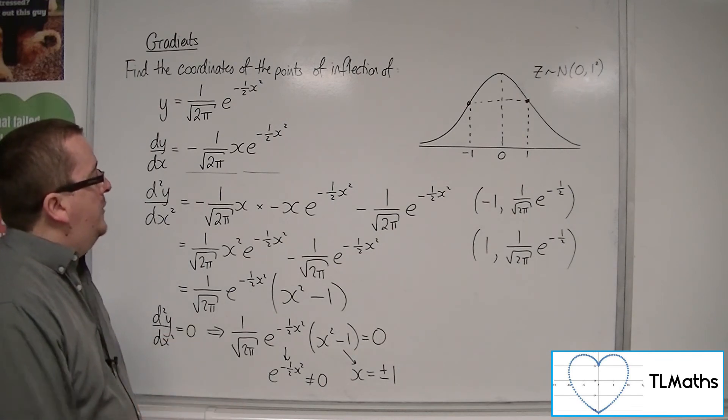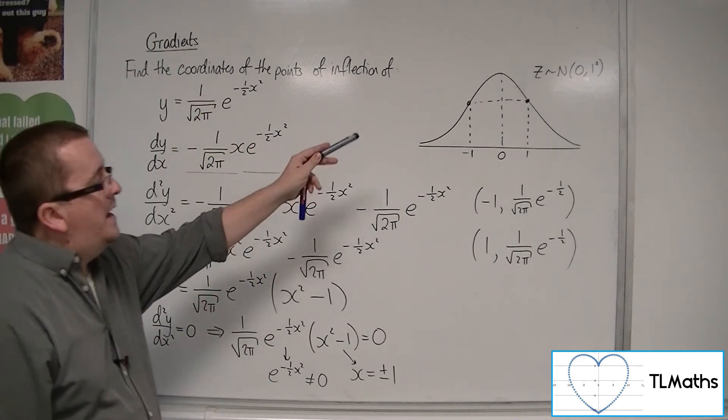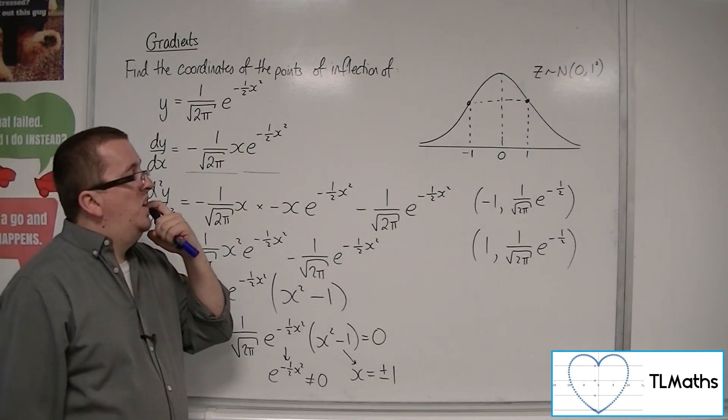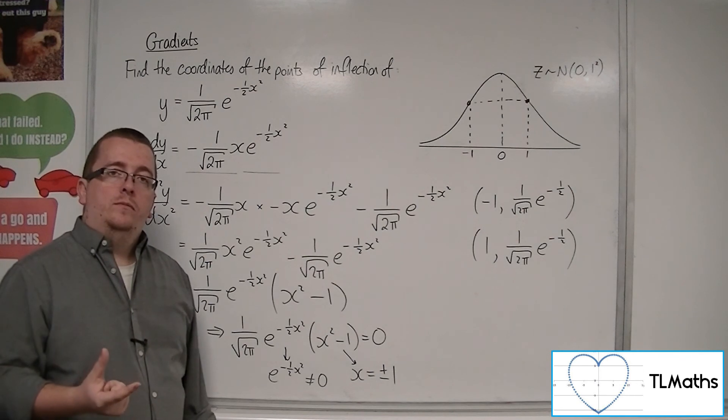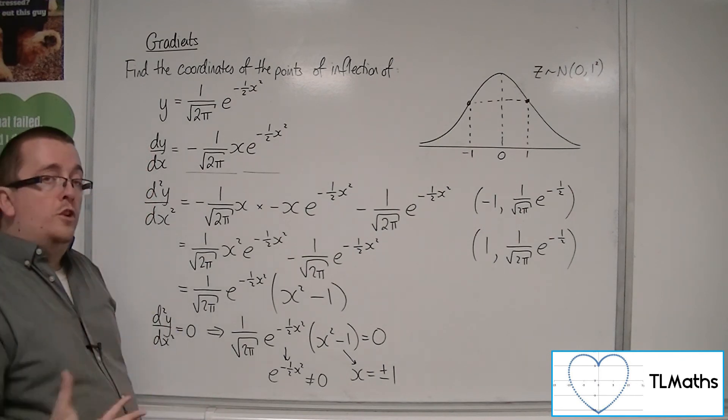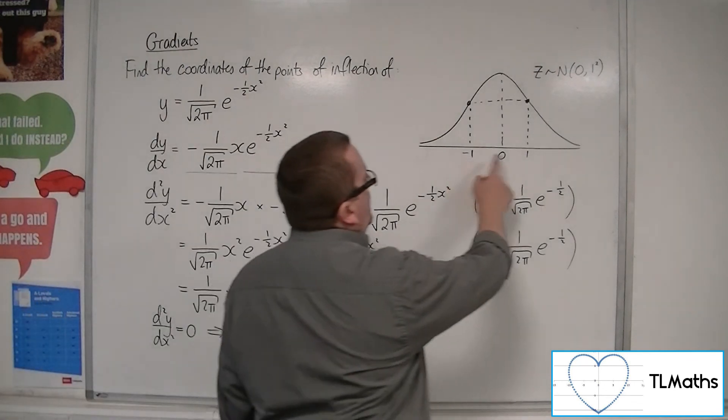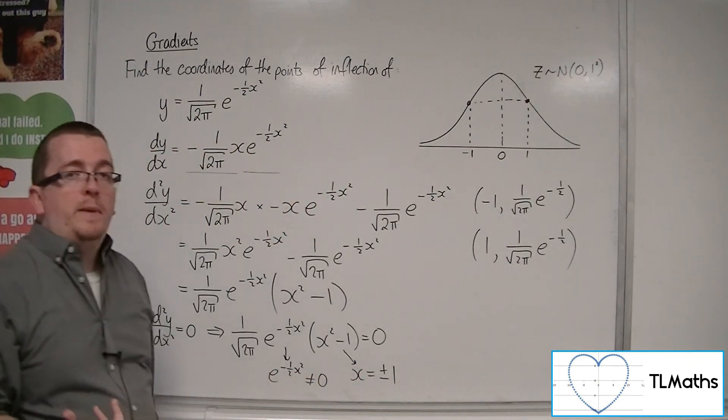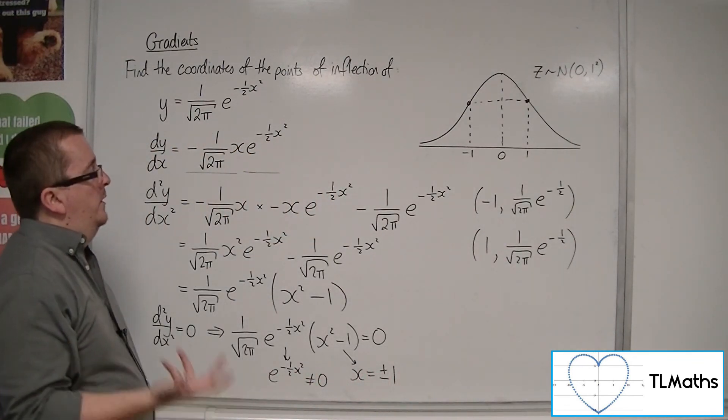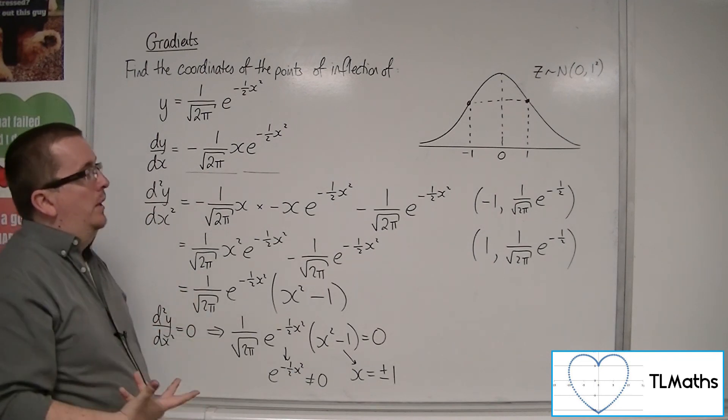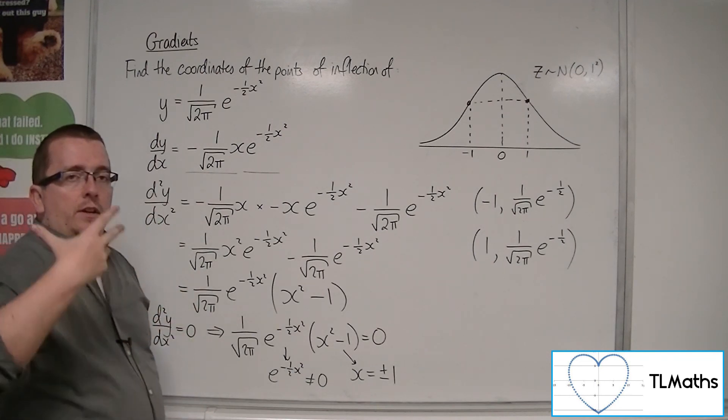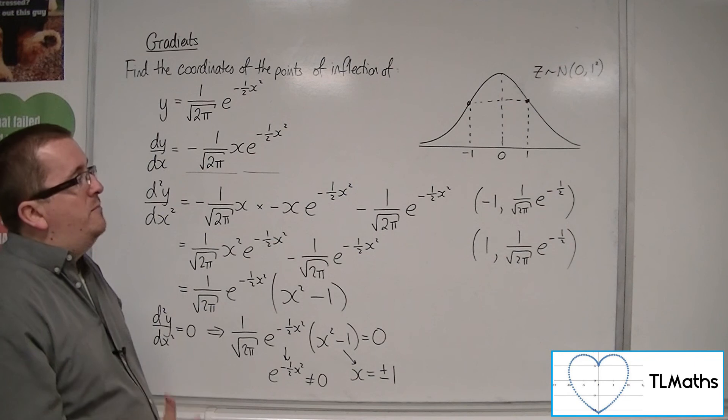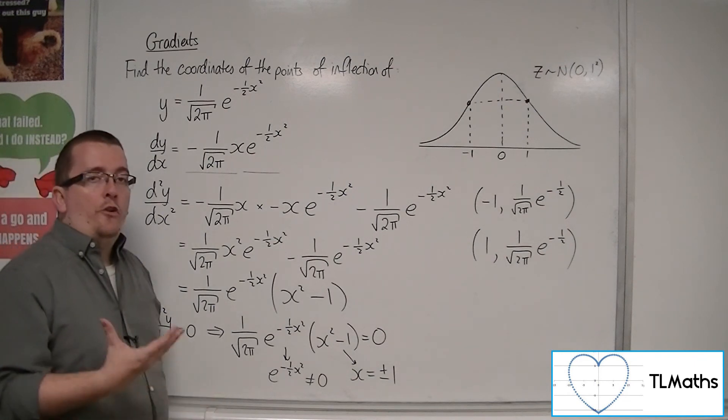So it's clear then that the points of inflection of the standard normal distribution appear at -1 and 1. So the consequence of that is that -1 and 1 is one standard deviation away from the mean. So we'll see if this continues when we look at the normal distribution—not the standard normal, the normal distribution where we have a mean of μ and a standard deviation of σ in the next video.